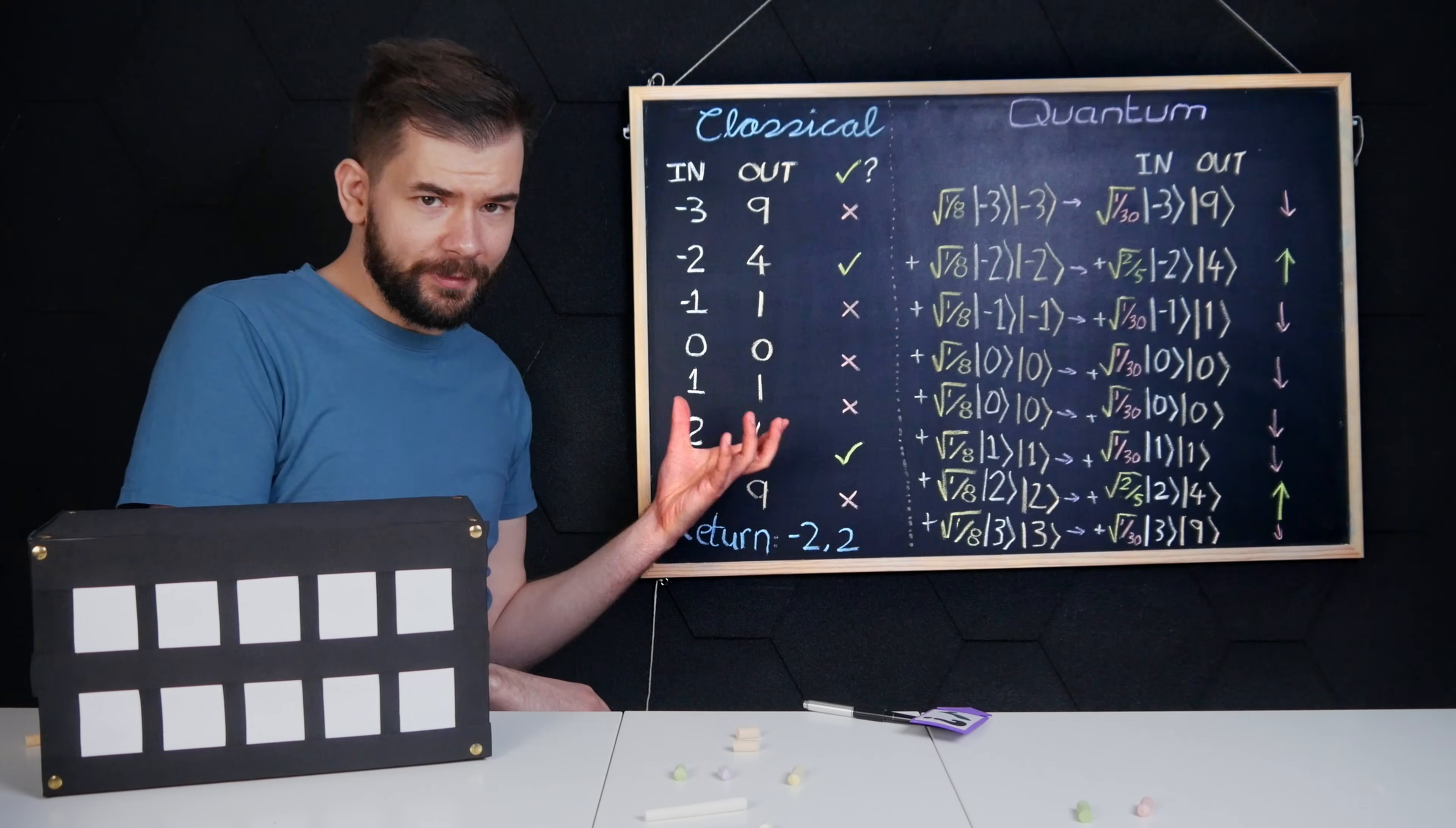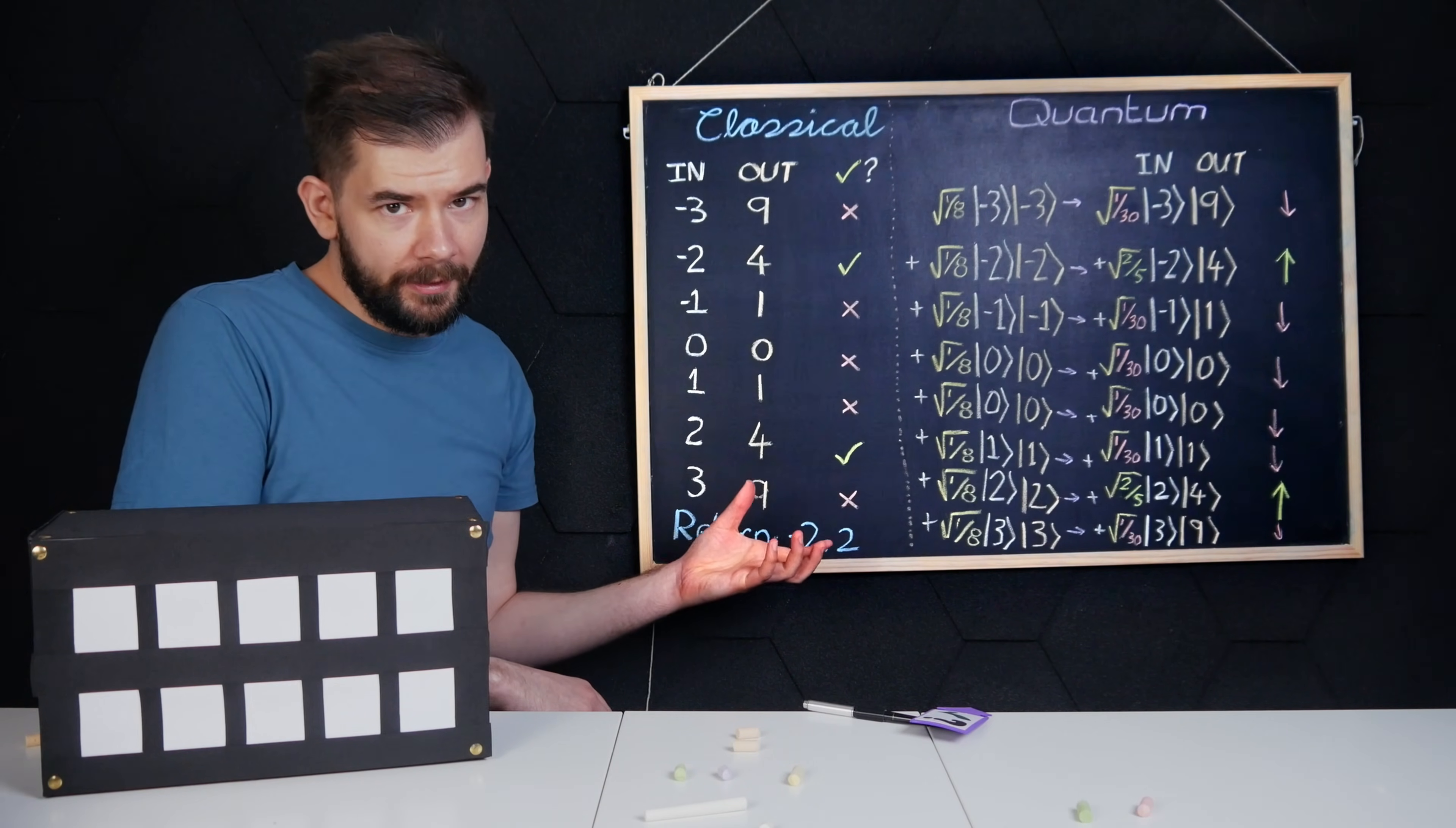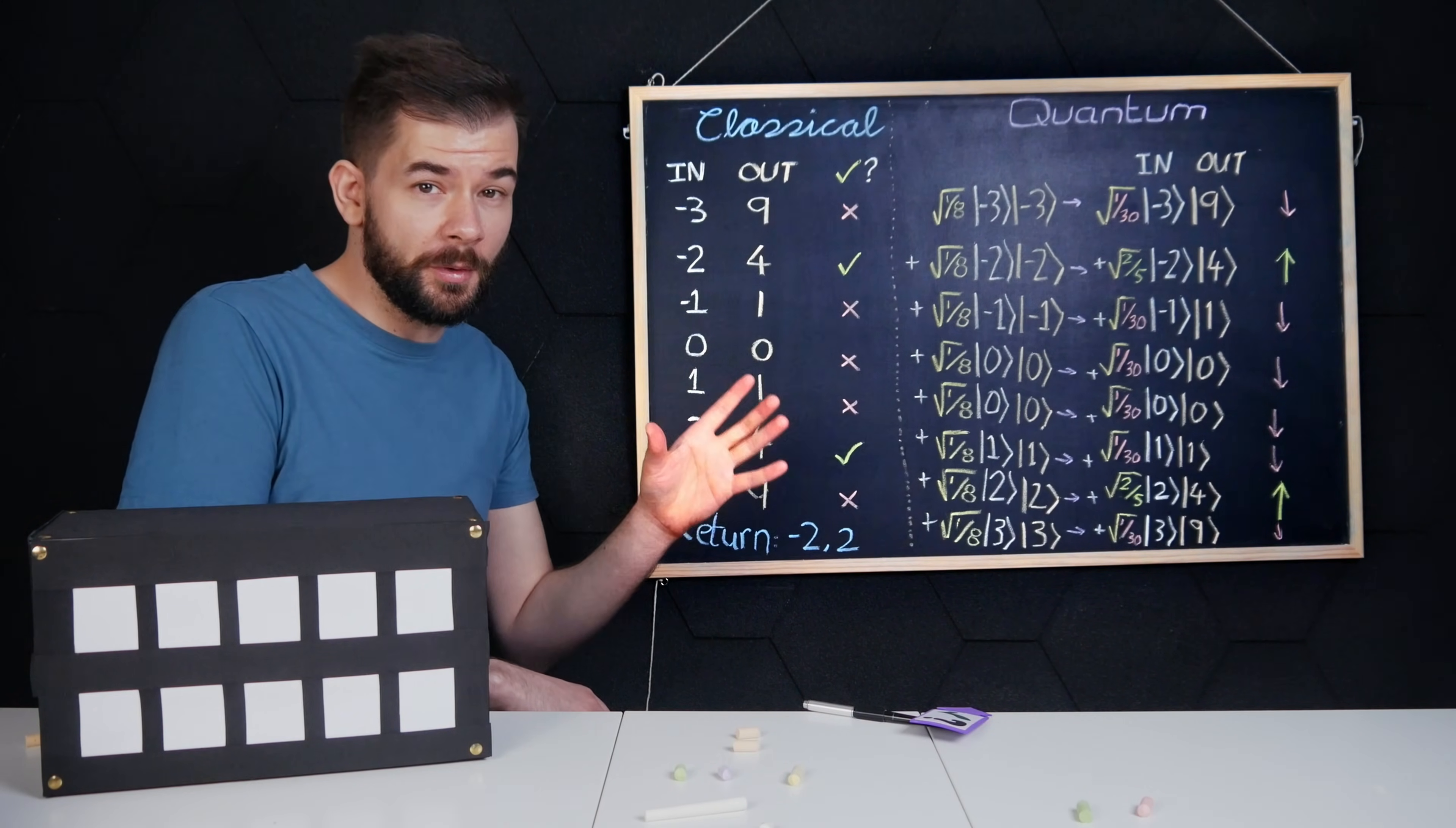Now this might not sound like a big deal, but what if there were a thousand options for my number? The classical computer would run a thousand computations, while the quantum computer might still only get away with just doing a few.